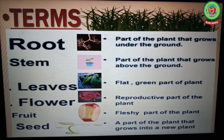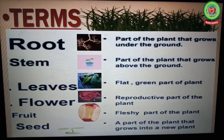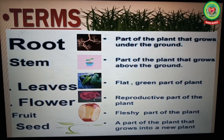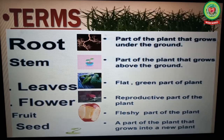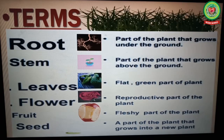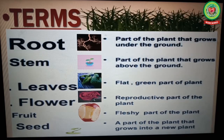Number one: root — part of the plant that grows under the ground. Number two: stem — part of the plant that grows above the ground. Number three: leaves — flat green part of the plant.